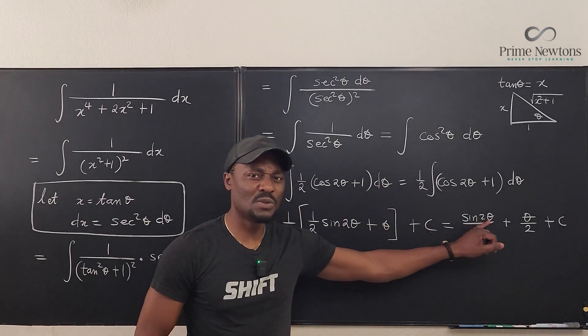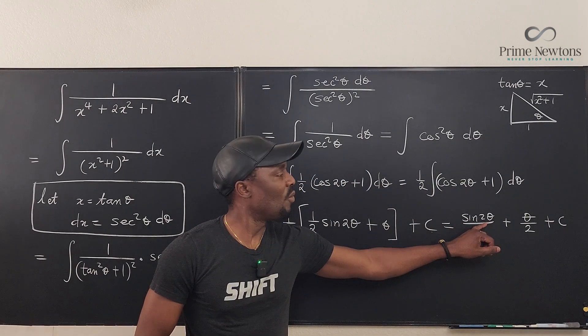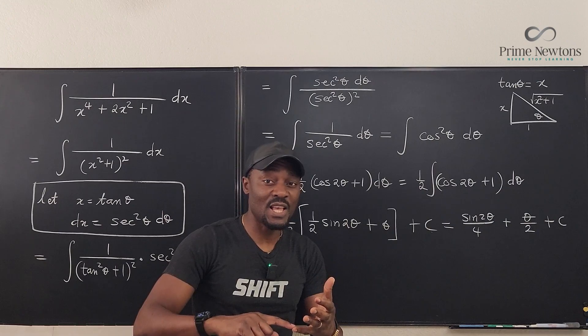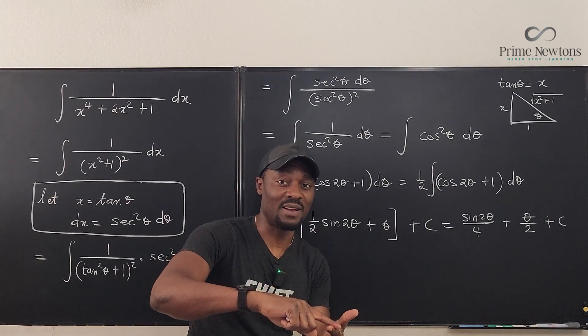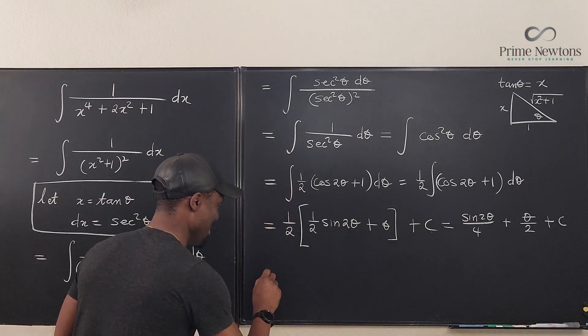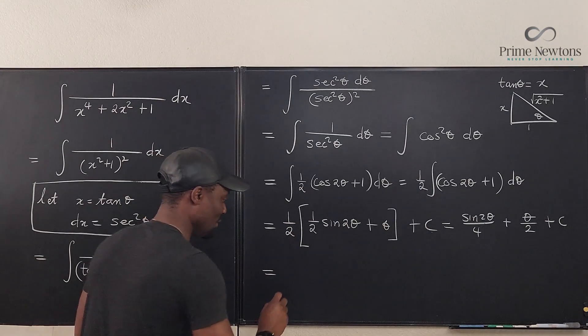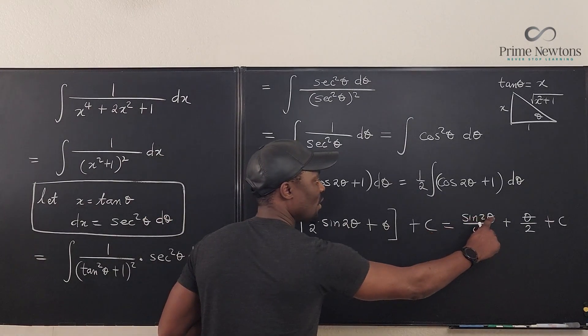So what is sin 2θ? Well, we know that sin 2θ is 2 sin θ cos θ, right? Okay, we have to keep going. This is going to be equal to 2 sin θ cos θ.